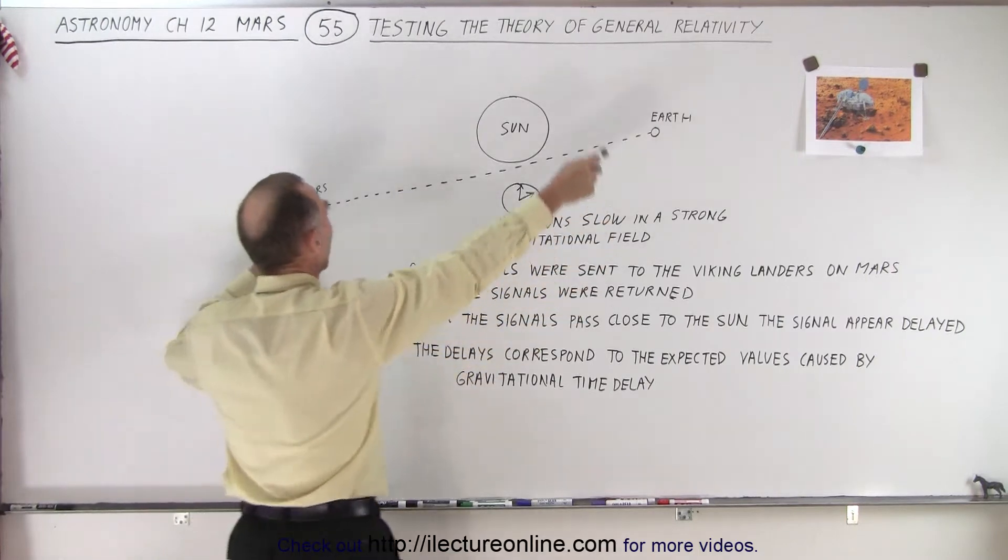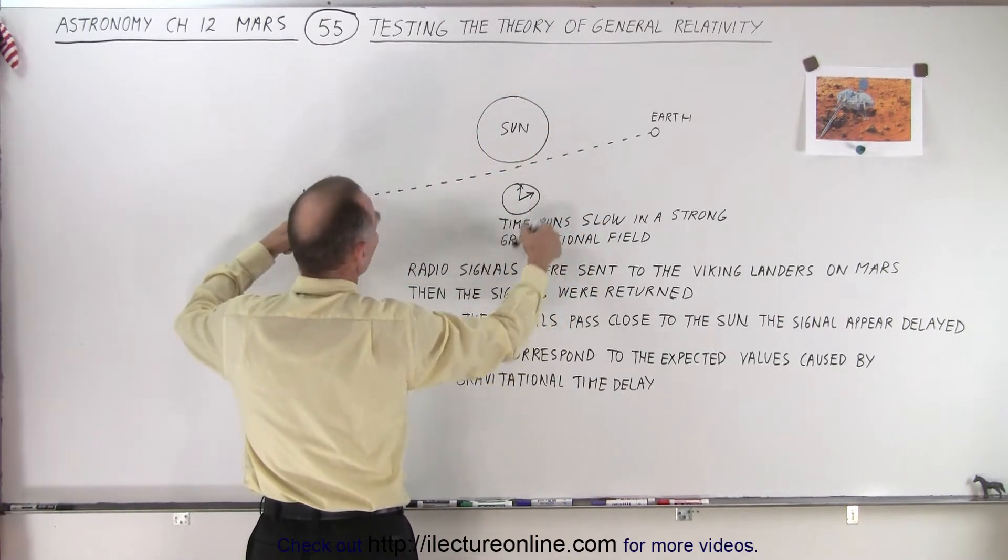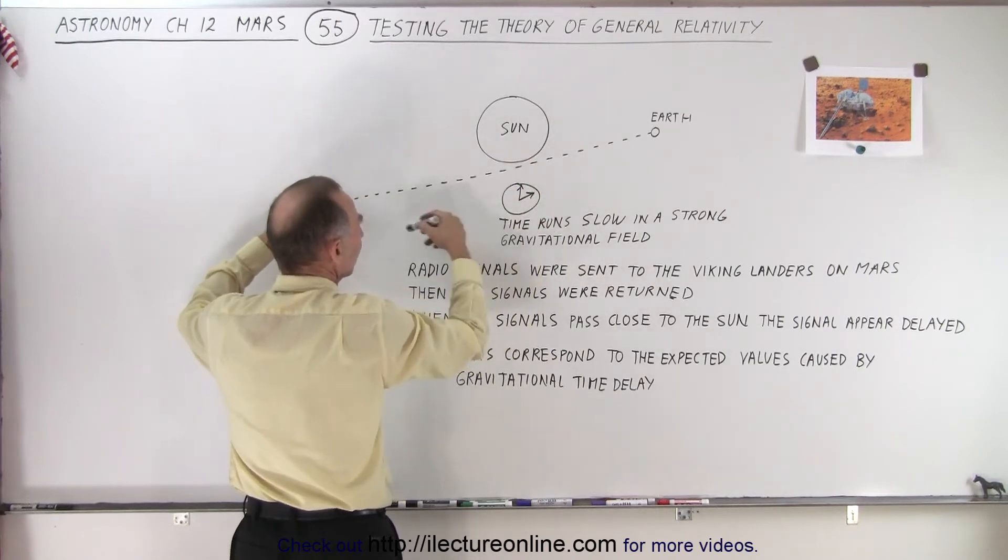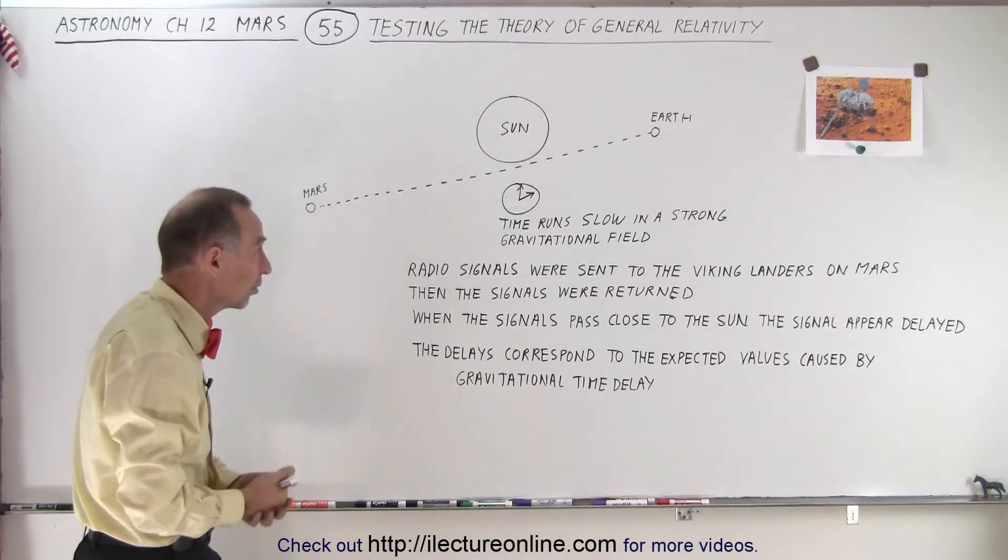When the Earth comes around and is at some other position relative to Mars so that the signal doesn't have to pass the Sun, then of course you have a direct line of sight where the signal does not pass close to the Sun.